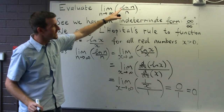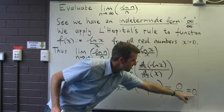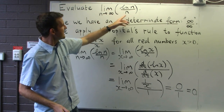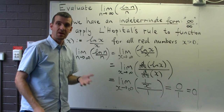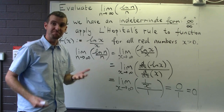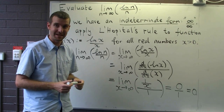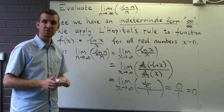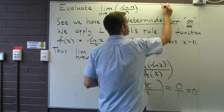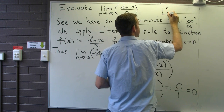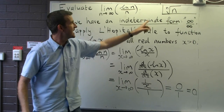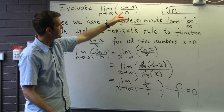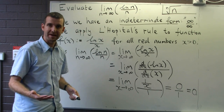So the limit of our sequence is zero. Now why is this an important problem? The knowledge of this limit will help us determine the limits of much more complicated sequences. For example, we can use this result to calculate the limit of the sequence nth root of n as n goes to infinity. So this is a very important limit, and we'll keep referring back to it.